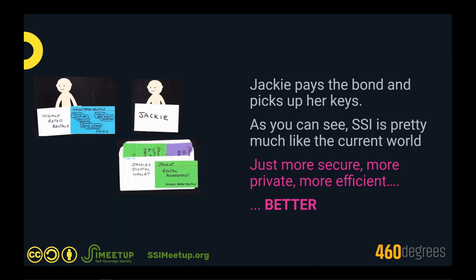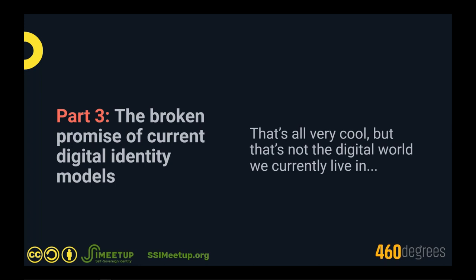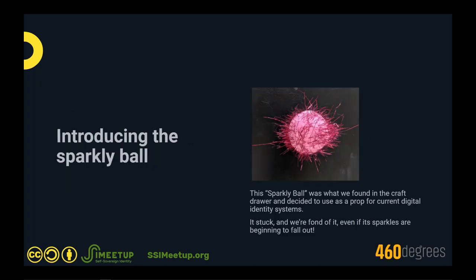Jackie accepts the offer — the rental agreement goes into her wallet, and Highly Rated Rentals get confirmation she has accepted. The contract may still need a wet signature for legacy legal reasons, but it is essentially guaranteed that Jackie has accepted. She still physically picks up the keys and pays the bond. The flow for Jackie, Highly Rated Rentals, and the bank is very much the same as before — just more secure, more private, more efficient, and basically better. Unfortunately that's not yet the digital world we currently live in.